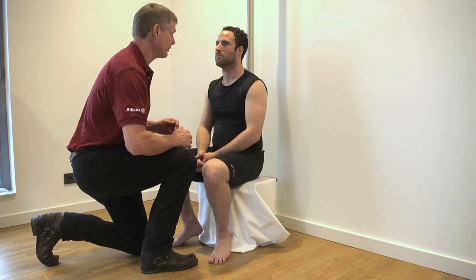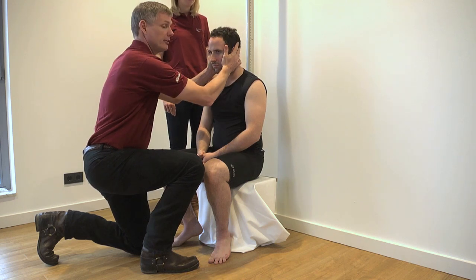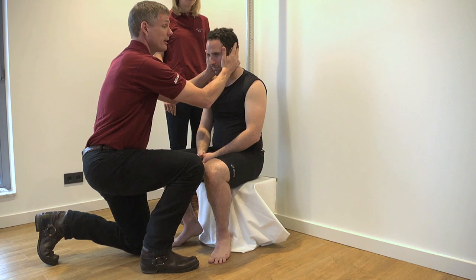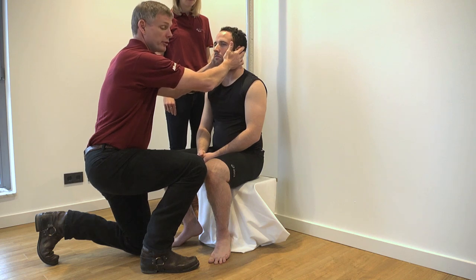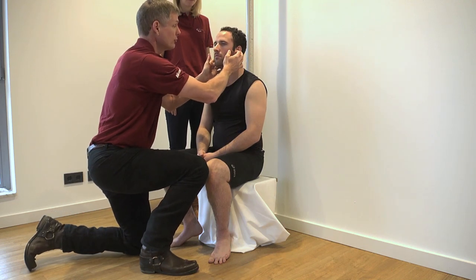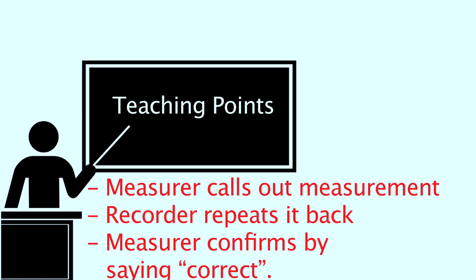Positioning and measurement. After all necessary landmarking has been completed, positioning and measurement can commence. Two people are required to execute these measurements accurately: one person taking the measurements (the measurer) and the other to record the measurements (the recorder). On some occasions the recorder also assists with taking the measurement. Teaching points: to reduce recording mistakes, the measurer should call out the measurement to the recorder, the recorder should repeat it back, and the measurer should confirm by saying 'correct'.